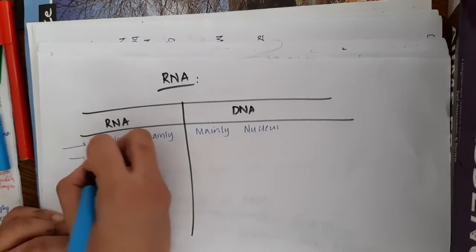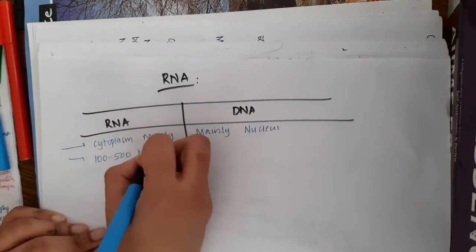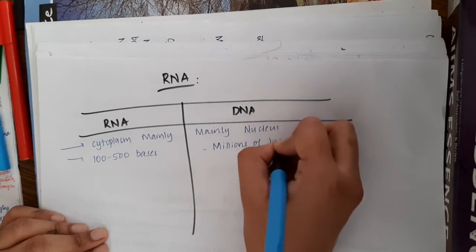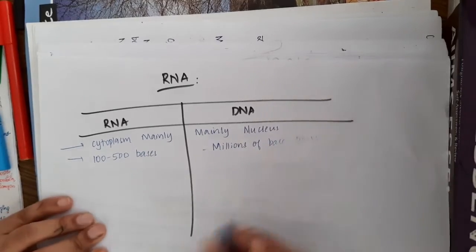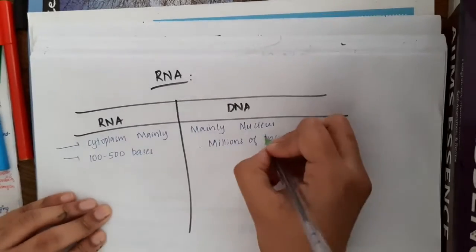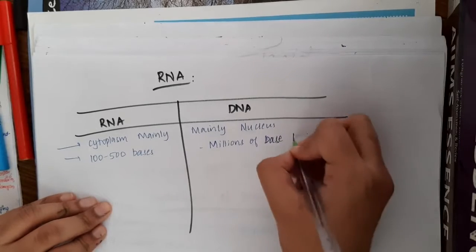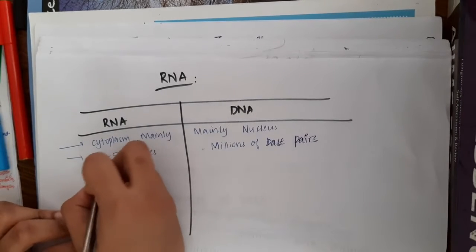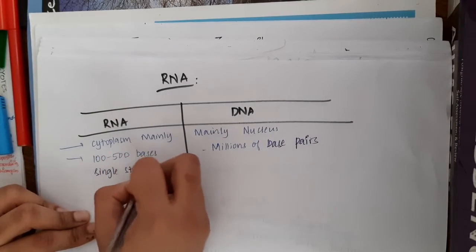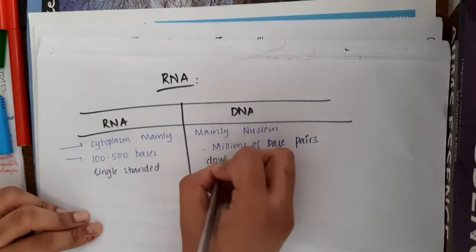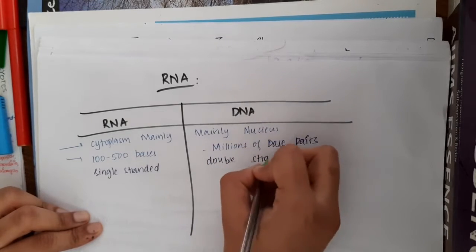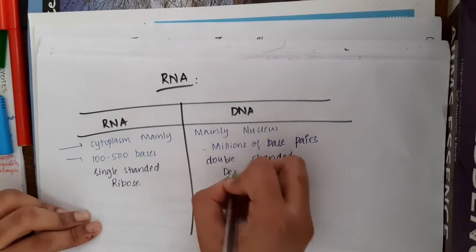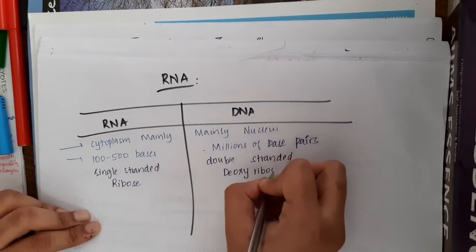Then RNA usually contains 100 to 500 bases, whereas DNA contains millions of base pairs. RNA is usually single stranded, while DNA is usually double stranded. The sugar present in RNA is ribose sugar, whereas the sugar present in DNA is deoxyribose sugar.